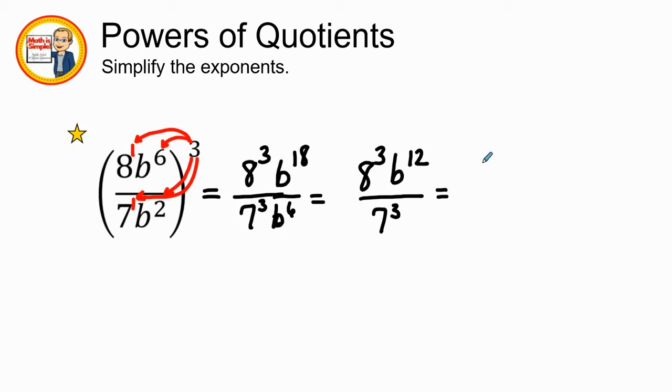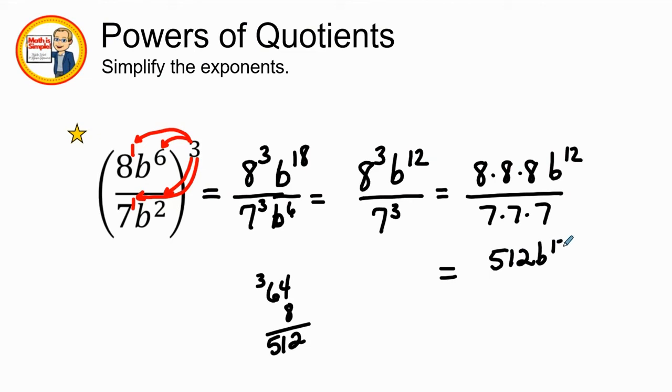So we will have 8 times 8 times 8 b to the 12th power over 7 times 7 times 7. So we see that 8 times 8 is 64 and 64 times 8 is 512 b to the 12th power. I didn't use the calculator because not all the times we have a calculator. So 7 times 7 is 49 and 49 times 7 again, that'll be 63, carry my 6, 28 plus 6 is 343. So my final answer is 512 b to the 12th power over 343.